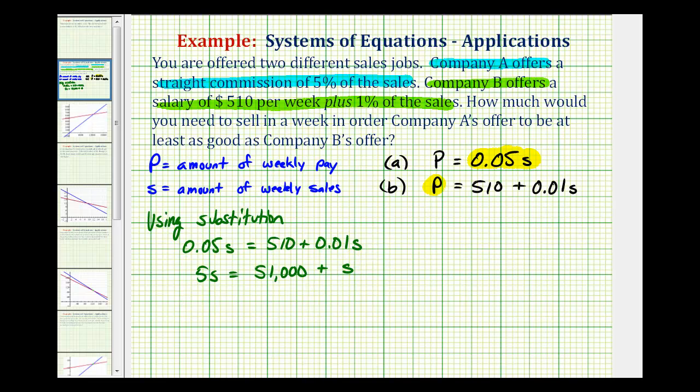And now to solve this equation for S, we'll subtract S on both sides of the equation. This would be 0. So we have 4S equals 51,000. Divide both sides by 4. This is going to come out to $12,750.